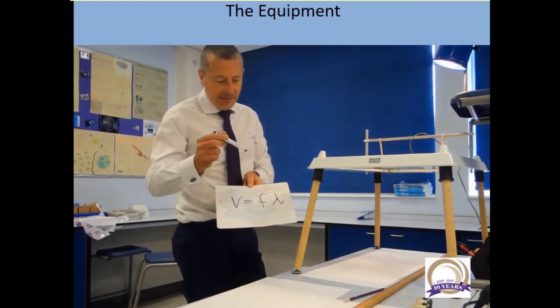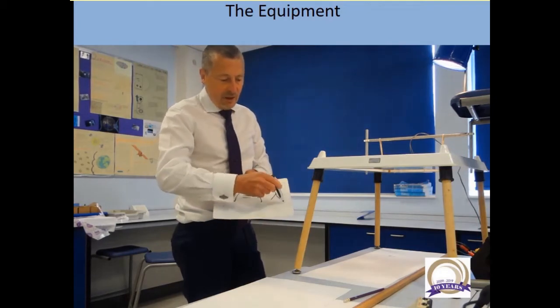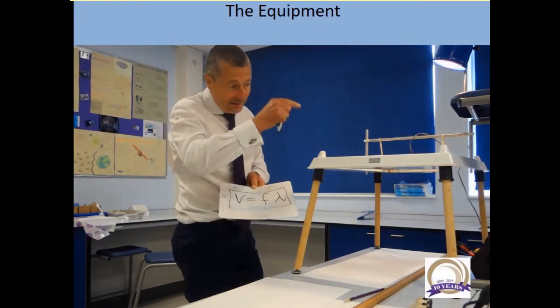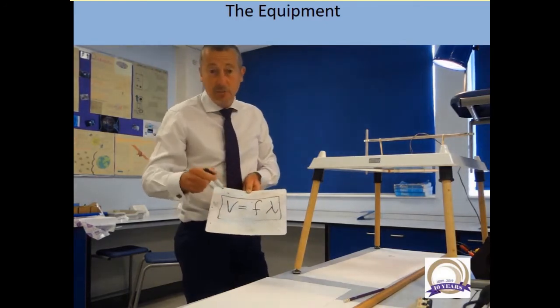Velocity in meters per second, frequency in hertz, wavelength in meters. So as soon as you see the required practical and you see that diagram of the ripple tank, that's what you should be thinking.